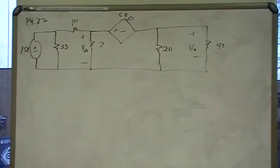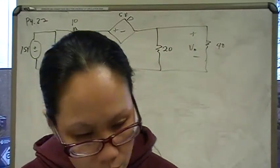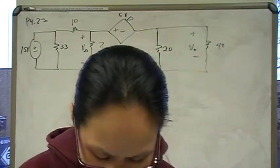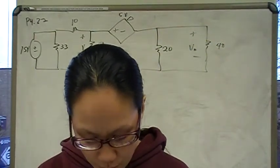Hi guys, so this is problem 27 from chapter 4, and it's a section on node voltage circuit analysis.